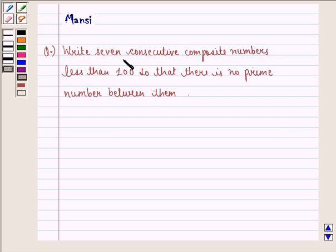The question says, write seven consecutive composite numbers less than 100 so that there is no prime number between them.